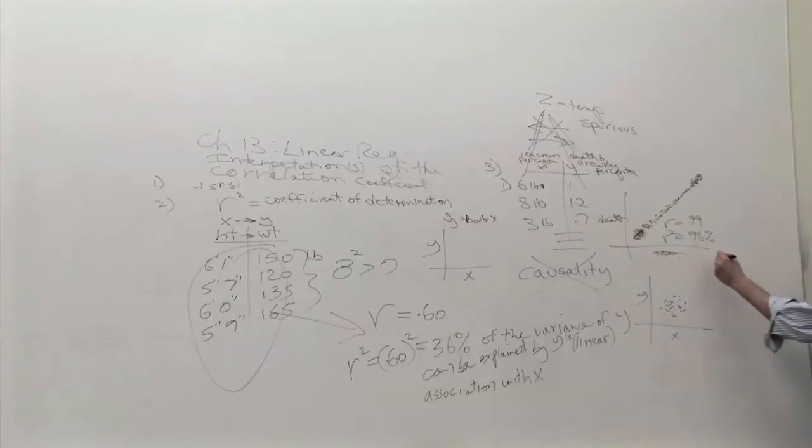So when the computer tries, basically the correlation tries to see how close to a straight line is the data, the computer's going to see something like this. And it's going to say, hey, it's pretty much a straight line, and therefore it might look like a correlation equals, I don't know, 0.80.